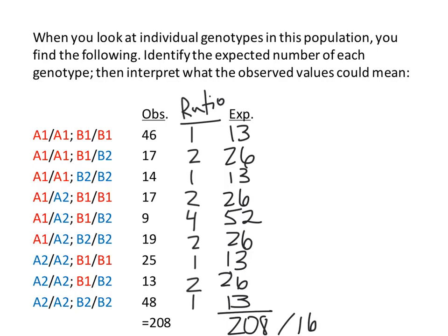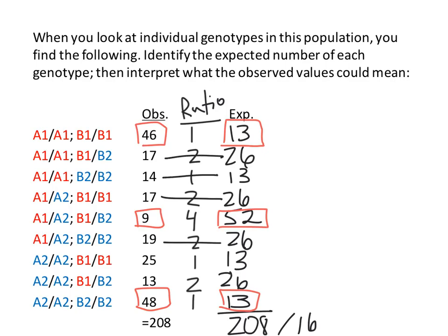Interpret what the observed values could mean. It feels like there's a homozygous advantage — or at least a heterozygous disadvantage. If you're homozygous at both loci, there are more of you in the population than we would expect by chance. And the opposite is true for dihybrids — fewer than expected based purely on allele frequencies. Either being homozygous for both loci is beneficial, being a heterozygote is detrimental, or both.